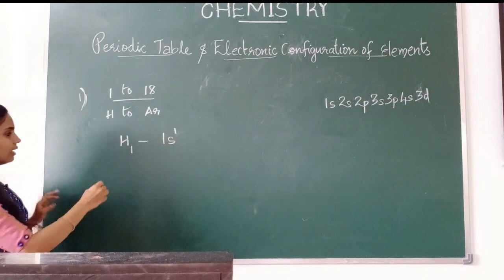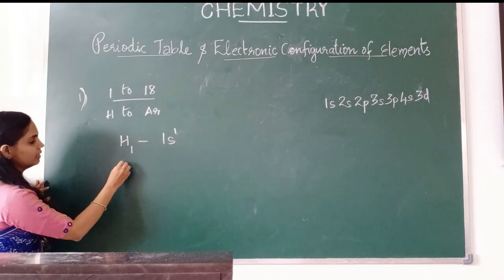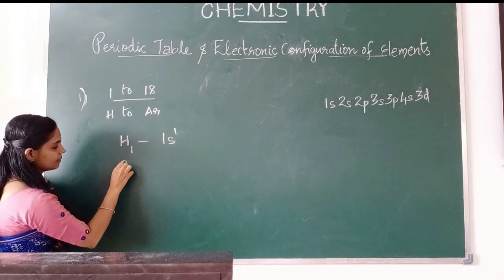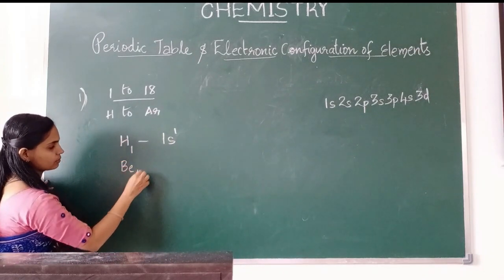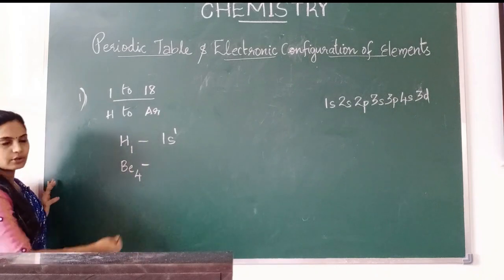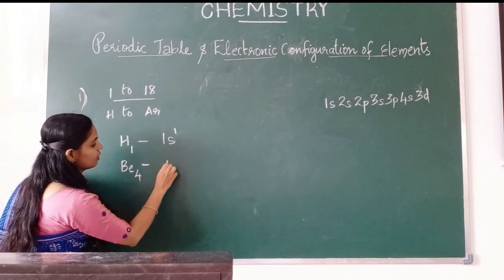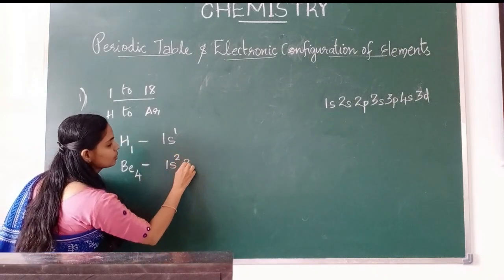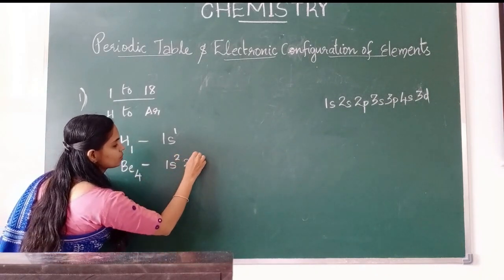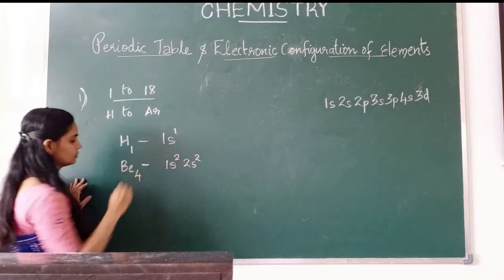Another example: beryllium. Atomic number 4. Electronic configuration: 1s2, 2s2.